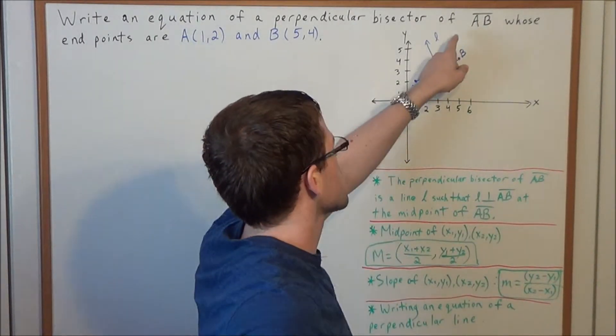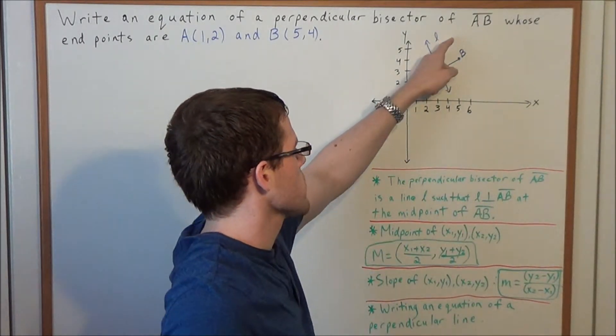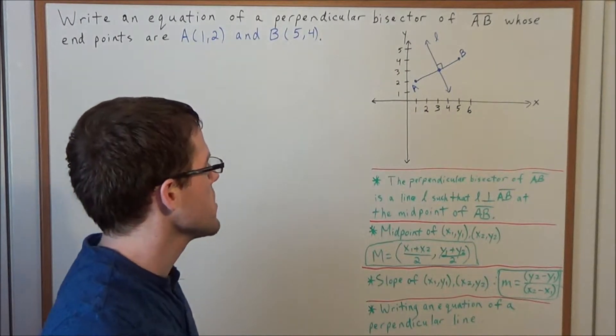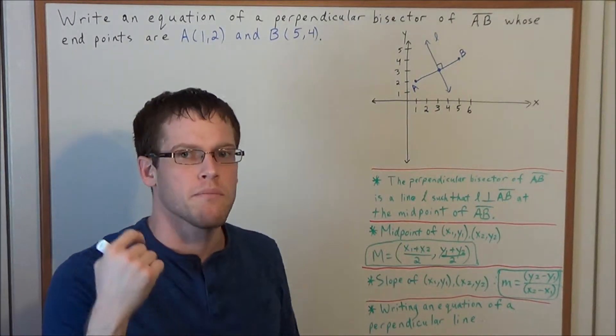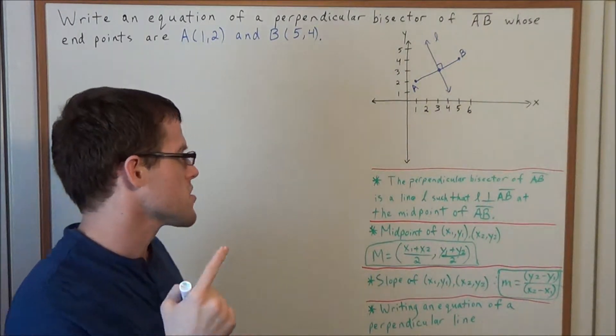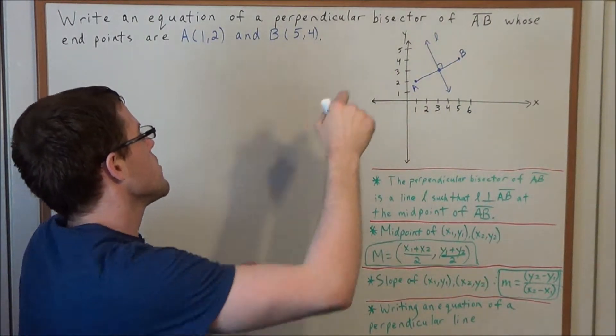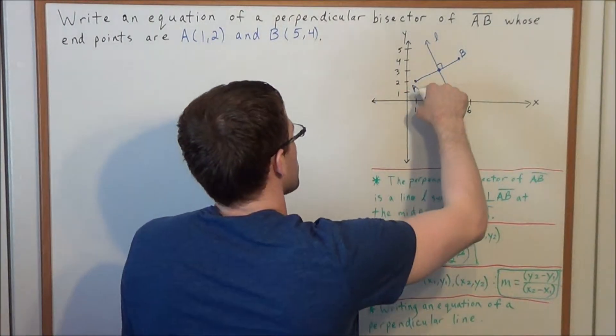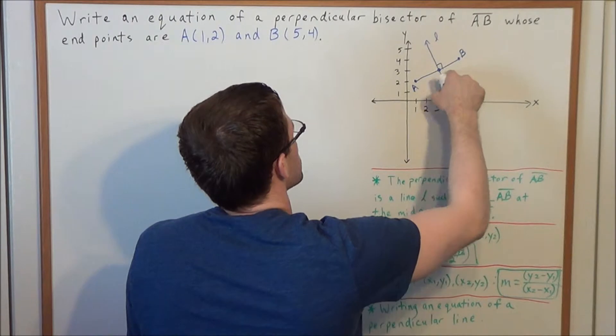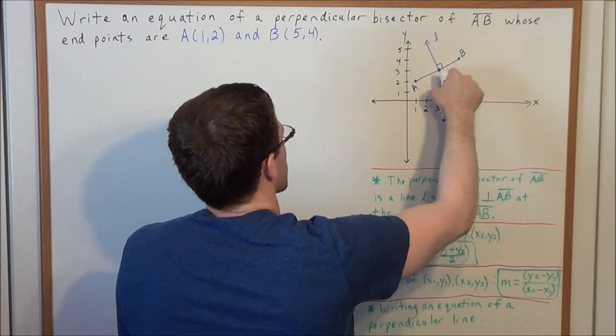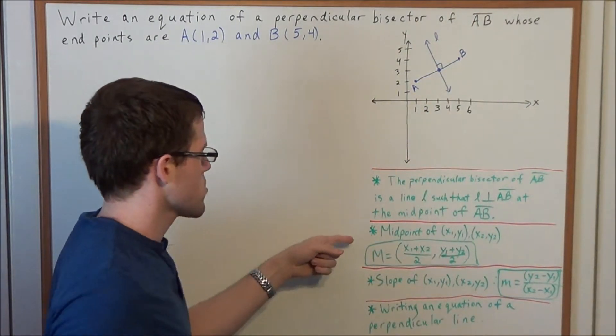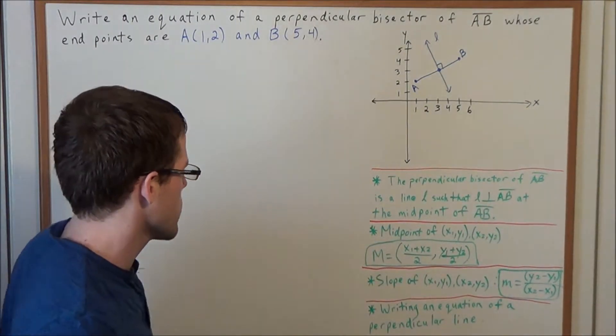Now our goal is to write an equation for line L. So we need two things: we need a point and we need a slope. The point we're going to use is the midpoint of line segment AB, so we need the following equation.